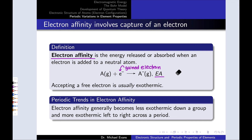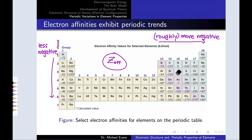I tend to use the terms more and less exothermic when discussing periodic trends for electron affinity. Electron affinity becomes less exothermic as we move down a group — most exothermic at the top, least exothermic at the bottom — and becomes more exothermic as we move left to right across a period, with the least exothermic on the left and the most exothermic on the right. So the most exothermic elements for electron affinity are in the top right of the periodic table, like fluorine, and the least are in the bottom left.